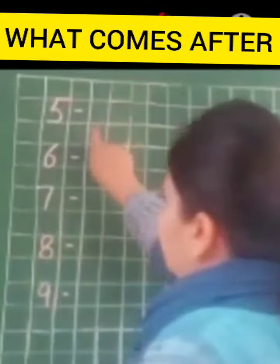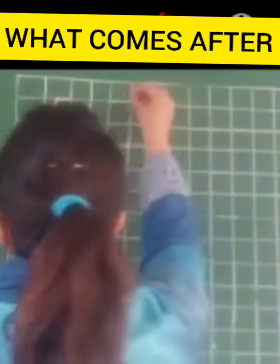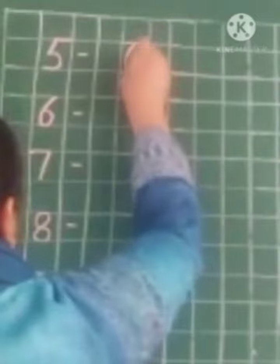For that children, you have to leave one block and write in the next block. So let's write number 6. So we have written number 6.